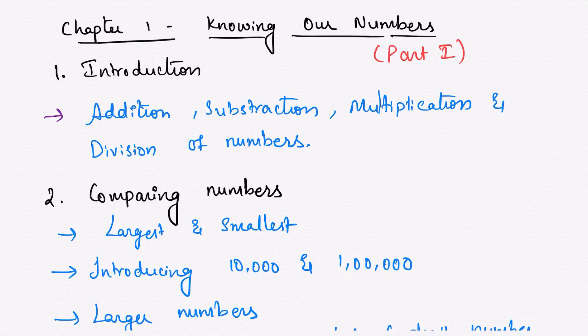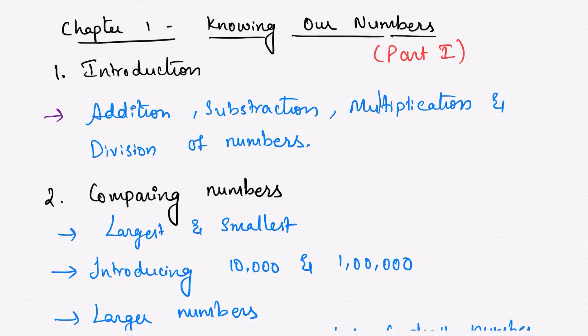Hi students, I'm Asha Rai. Today let us learn about 'Knowing Our Numbers,' Chapter 1. I am dividing this into three parts: Part 1 will deal with introduction, comparing numbers, conversion, and different systems of numbers in Indian and International numeration. Part 2 will cover estimation of numbers, and Part 3 will deal with Roman numbers.